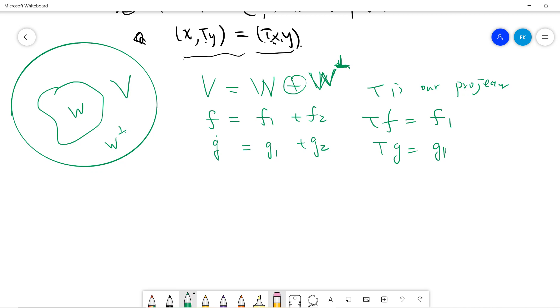Okay, so let's do it. Suppose ⟨Tf, g⟩, right, will be ⟨f₁, g⟩. So this is the trick that I want to use. I want to basically change it, so I can write ⟨f₁, g⟩ plus ⟨f₂, g⟩. So notice that, the trick is, what is ⟨f₂, g⟩? So basically, if we want to show that ⟨Tf, g⟩ is equal to ⟨f, Tg⟩, right? So Tf basically only gets f₁.